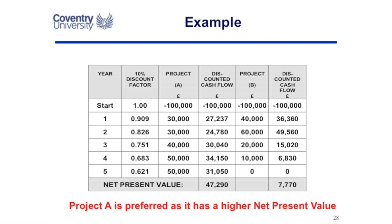Any project with a net present value higher than zero is worth doing — if it's positive, we get our money back; if negative, we don't. Project A has a significantly higher net present value at £47,000 against Project B's £7,700. But let's look at what decision you'd arrive at if you calculated the payback for both projects.